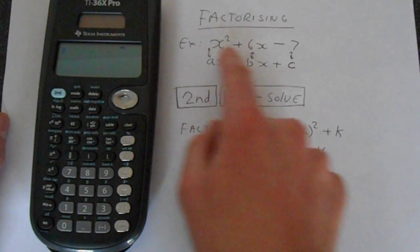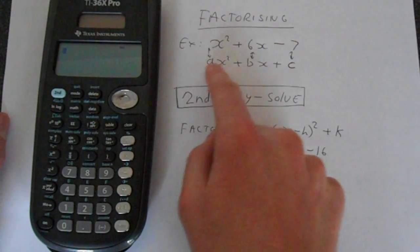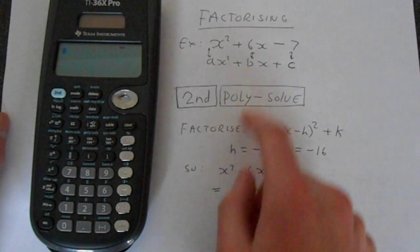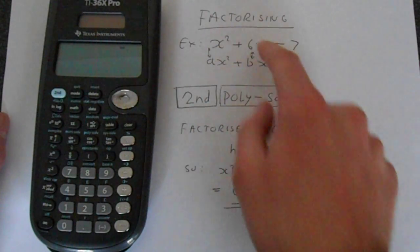So if we have an equation like x squared plus 6x minus 7, which is in the form ax squared plus bx plus c, you can compare these and get a, b, c.